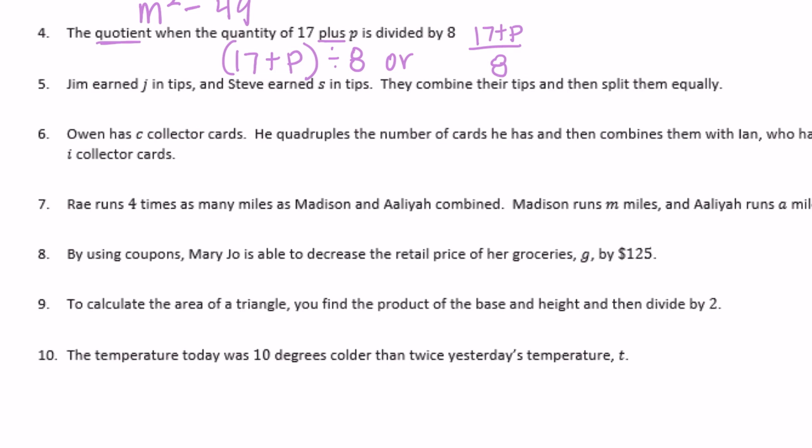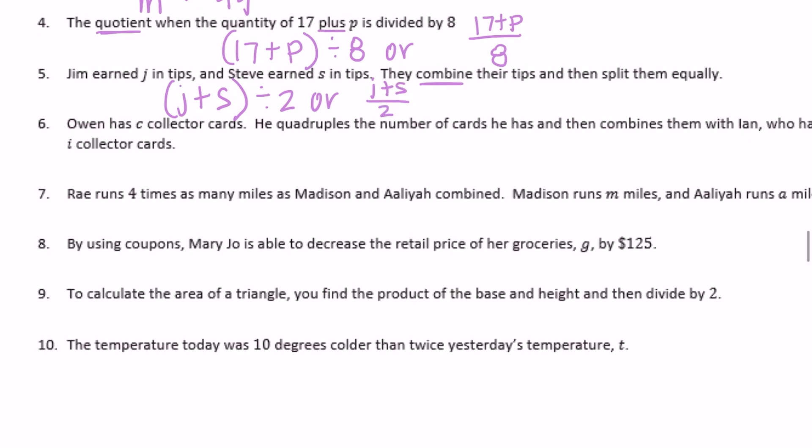Number five: Jim earned J in tips and Steve earned S in tips. They combined their tips, so combined means adding them together: J + S. Then they split them equally. Since there are two of them, Jim and Steve, we split it two ways: (J + S) ÷ 2, or the fraction (J + S)/2.